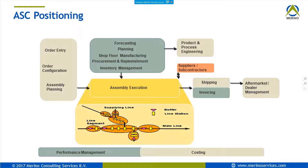Assembly control links to order entry and order configuration — we're talking about sales orders. The demand for assembly line manufacturing comes from sales orders, linked to the product configuration via PCF or the external configurator of Infor. We have two ways of configuring sales orders, and the products from those sales orders are the demand input for assembly planning.